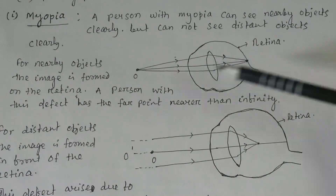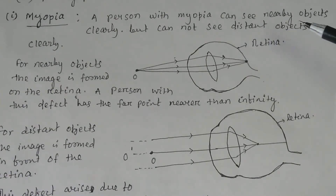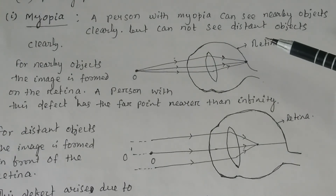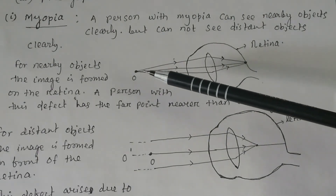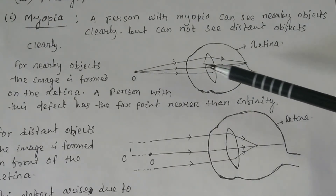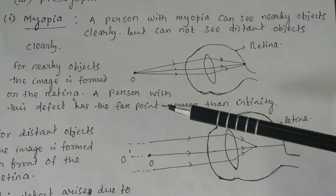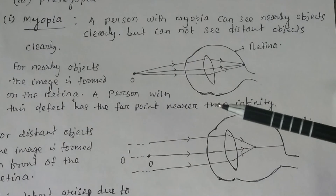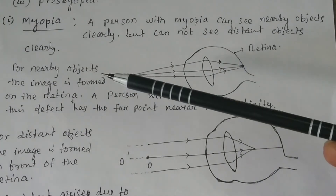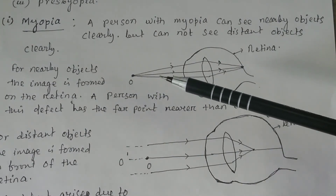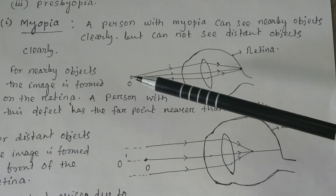Let us discuss what is myopia. A person with myopia can see nearby objects clearly but cannot see distant objects clearly. This is the retina of your eye, this is the eye lens, and this is a near point. For nearby objects, the image will be formed on the retina. A person with this defect has the far point nearer than infinity. For normal vision, the far point is at infinity and the near point is at 25 centimeters. But for a person with a myopic defect, the far point is not at infinity.